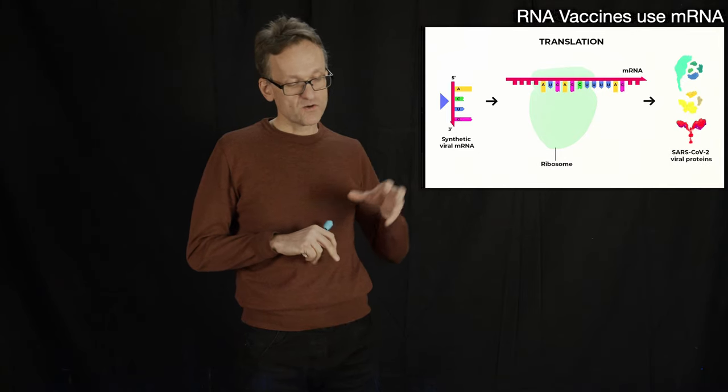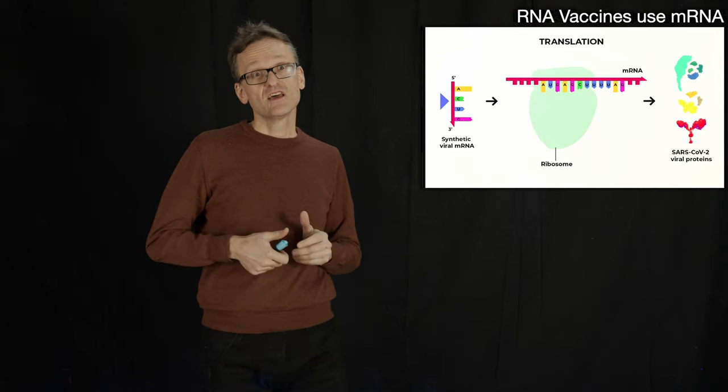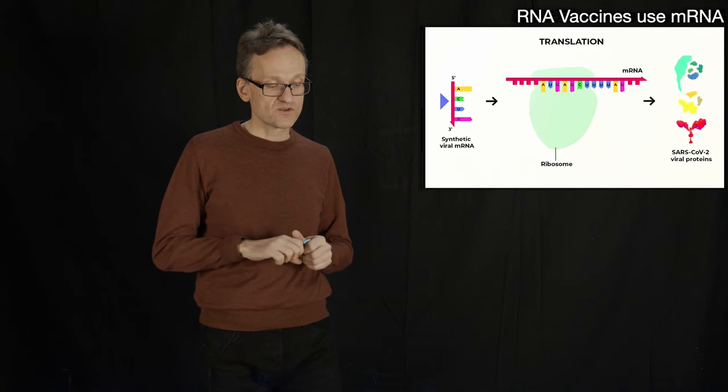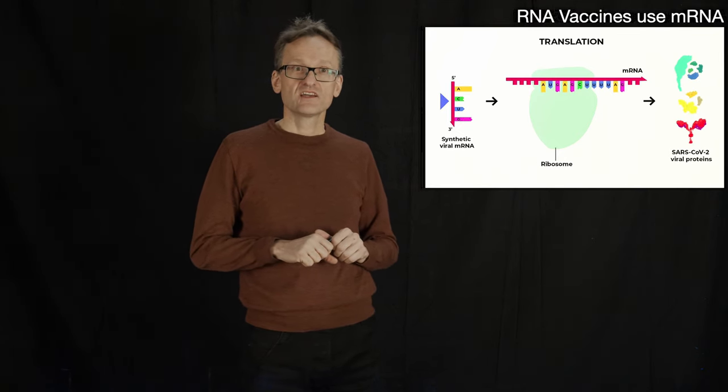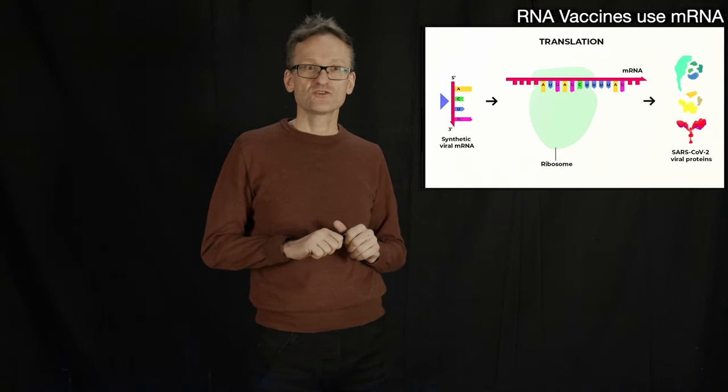uridine is the base, the combination of the uracil base and the ribose, the sugar. If you replace that with something called pseudo-uridine, it's going to be silent. It won't kick-start your immune system.